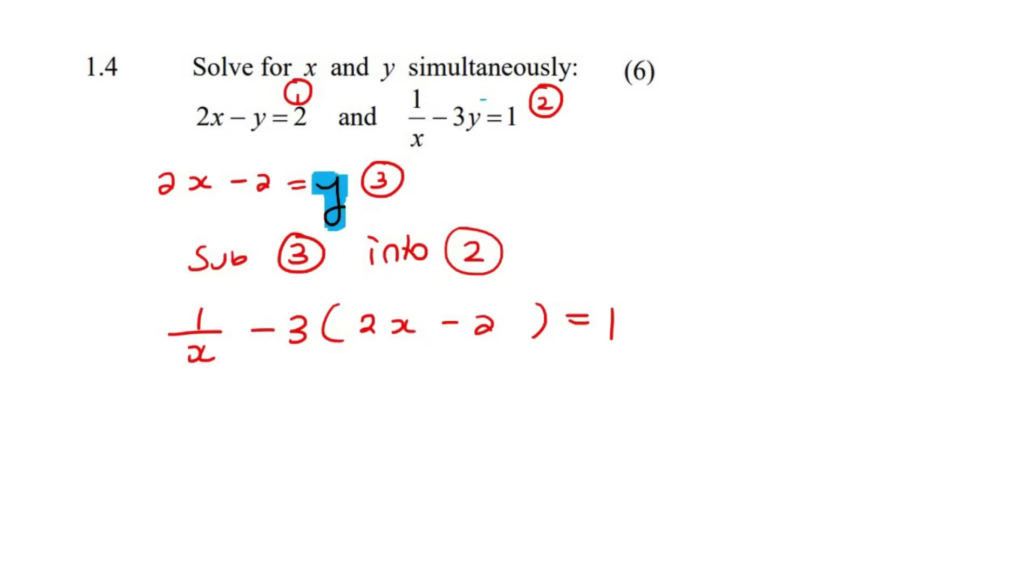Now we're just gonna go multiply that 3 into the brackets. That'll become negative 6X. Negative 3 times a negative 2 just becomes a positive 6 equals to 1. I'm gonna take the 6 over to the other side. I mean, there's so many different things you could do right now, but I'm gonna take that 6 over to the other side. So we end up with 1 minus 6, which is negative 5.